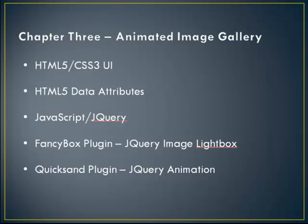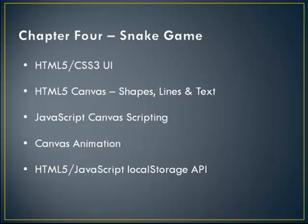Chapter four gets into HTML5 Canvas, which allows us to create shapes, lines, and text. We'll build the UI in HTML5, and use JavaScript for canvas scripting — filling shapes, drawing shapes, and animation all have to be done in JavaScript. The Snake game will also implement the local storage API for the score, so each time the snake eats food the score increases, and a high score persists until it's beaten by a new high score.